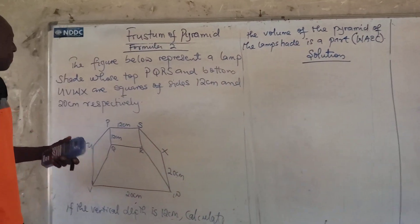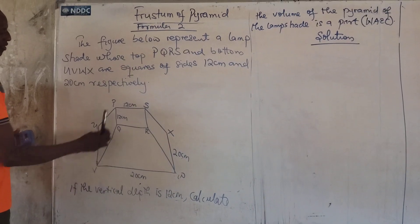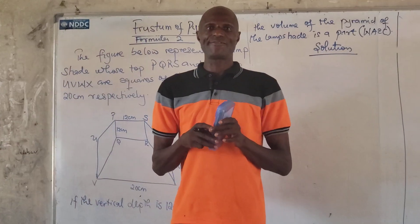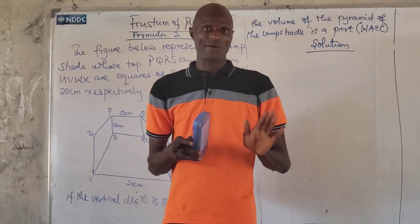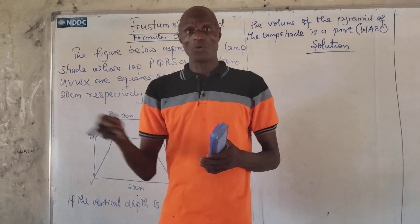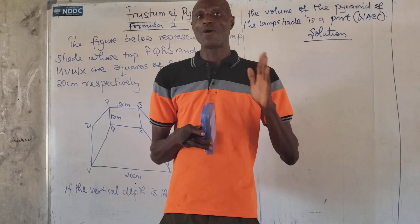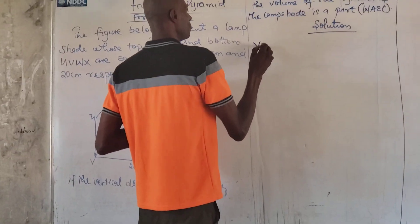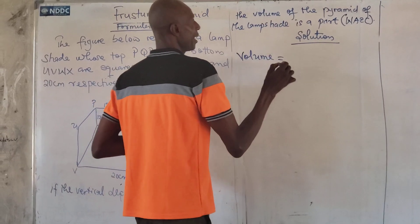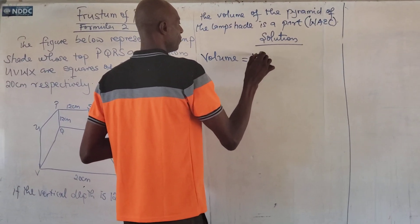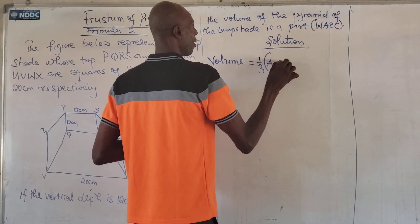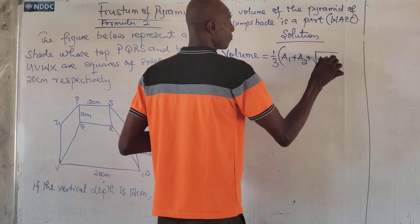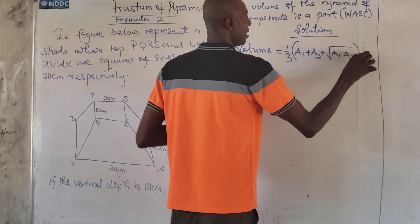So now, looking at the question, the pyramid has — it's a squared pyramid. 20-20, 12-12. 20-20 means it's a square. If the pyramid is in the form of a rectangle, you apply the area of a rectangle. For the full stream of a cone, I apply the formula for area of a circle. This is using the same formula. The volume, or the full stream, is 1 over 3 into area 1 plus area 2 plus the square root of area 1 times area 2, times the height.